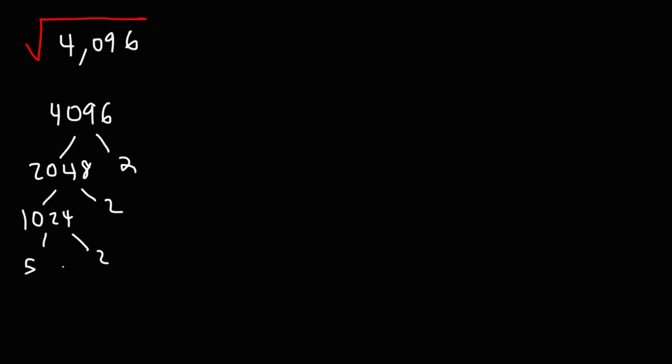Half of 10 is 5. Half of 24 is 12. And then we could divide it by 2 again. Now, 512 divided by 2. 500 divided by 2 is 250. 12 divided by 2 is 6. So adding the two numbers, we get 256. 256 is a perfect square. 16 times 16 is 256.